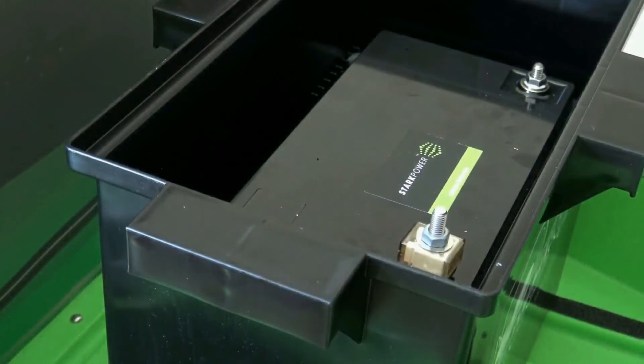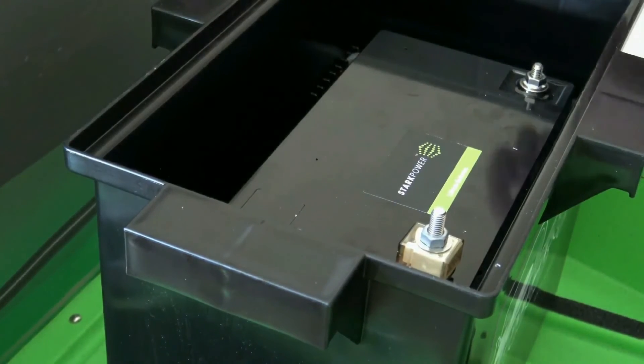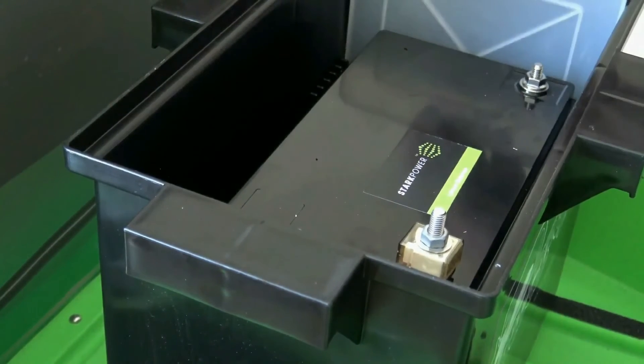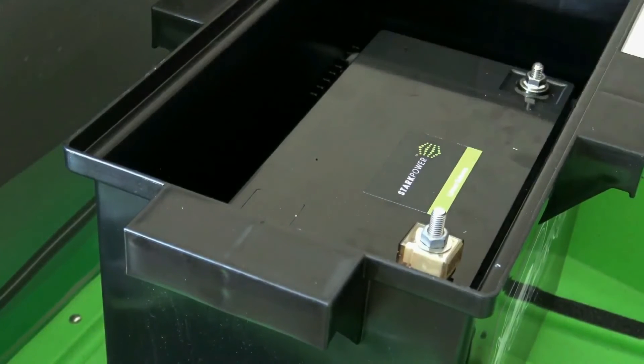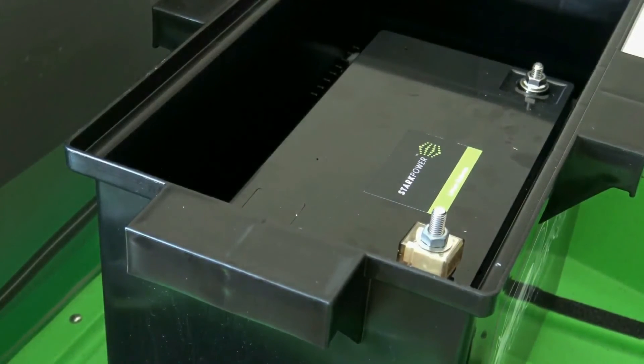The lower compartment houses the battery, and it will hold a large group size 31 deep cycle marine battery. A partition is included to stabilize a smaller battery if used. We've not included the battery in the system package. We've left that choice to the consumer.